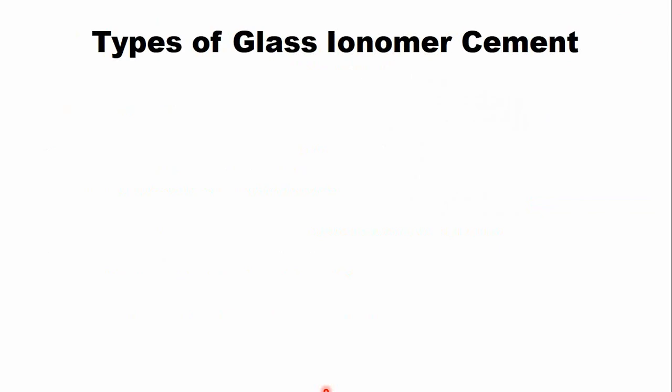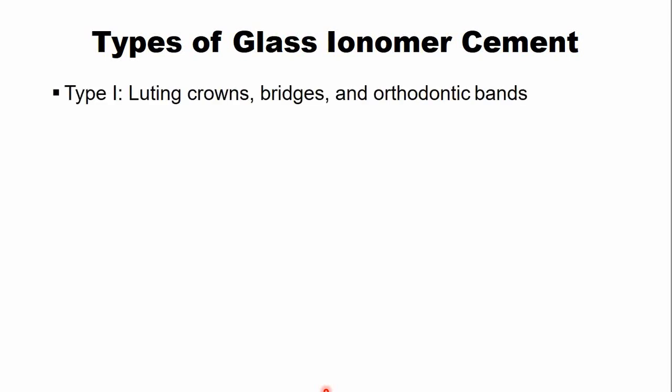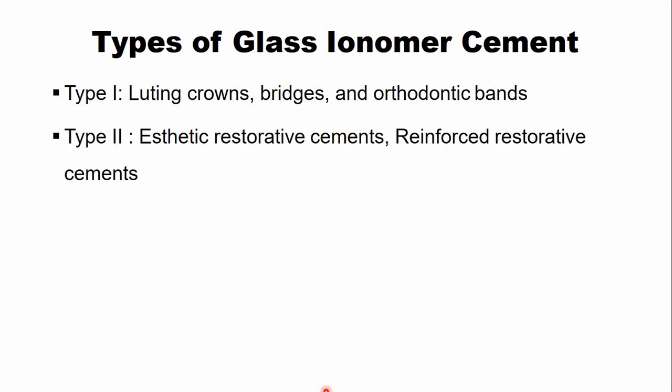There are three basic types of glass ionomer cement based on their applications. Type 1 is the luting cement, used for luting crowns, bridges, and orthodontic bands. Type 2 is the restorative cement, used for aesthetic restorative and reinforced restorative applications. Type 3 is used for lining and base applications.